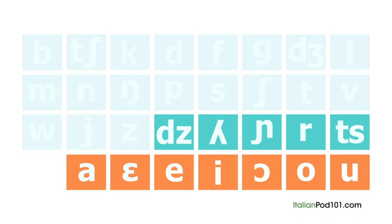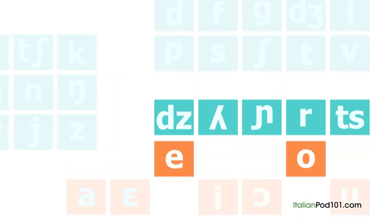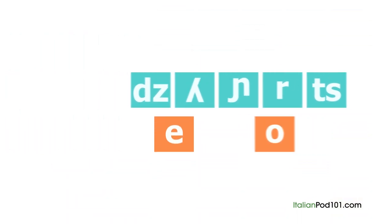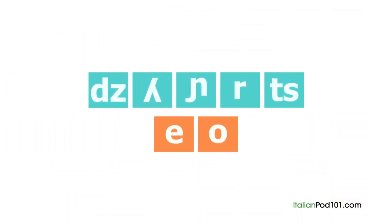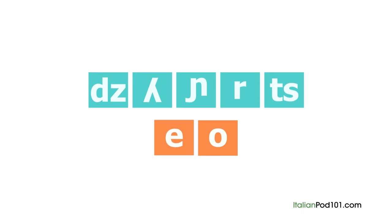Of the 24 consonant sounds in Italian, you already know 19 of them. If you're a native English speaker, you already make these sounds every day. You can also ignore 5 of the vowel sounds for the same reason. The only things standing between you and perfect Italian pronunciation are 5 new consonant and 2 new vowel sounds — you can handle that.